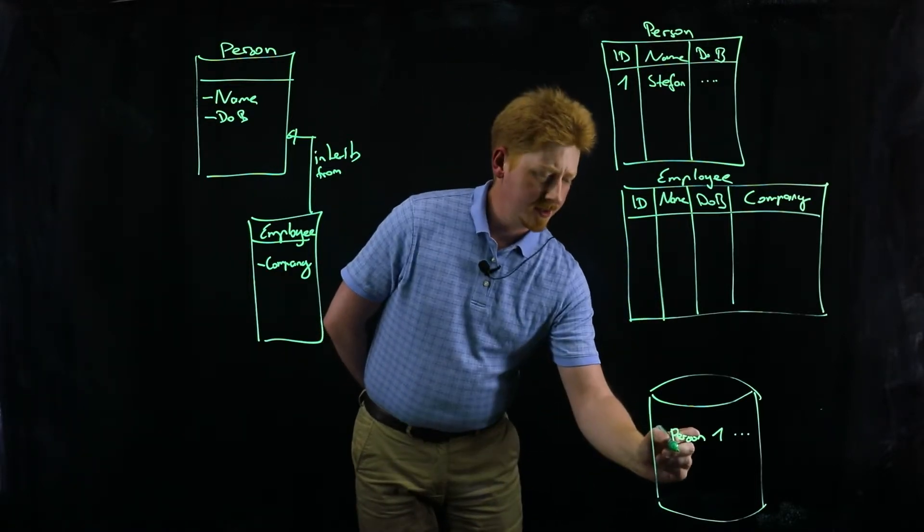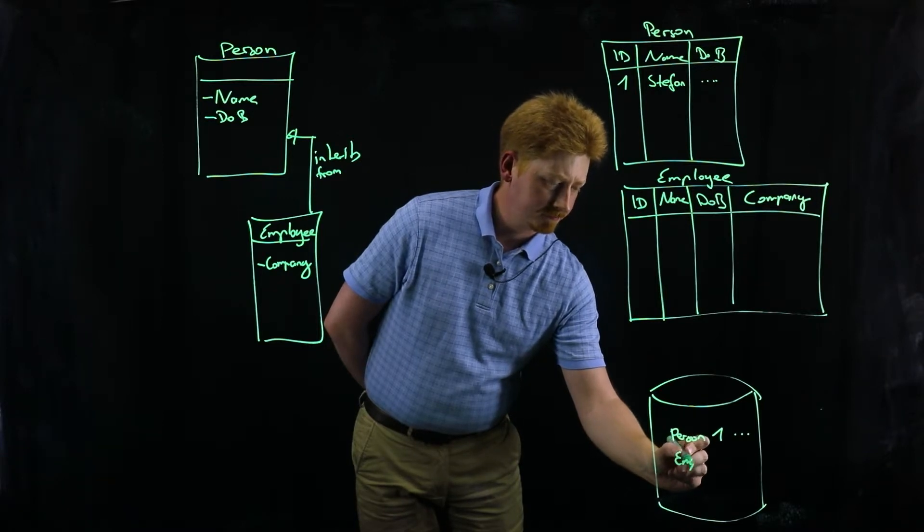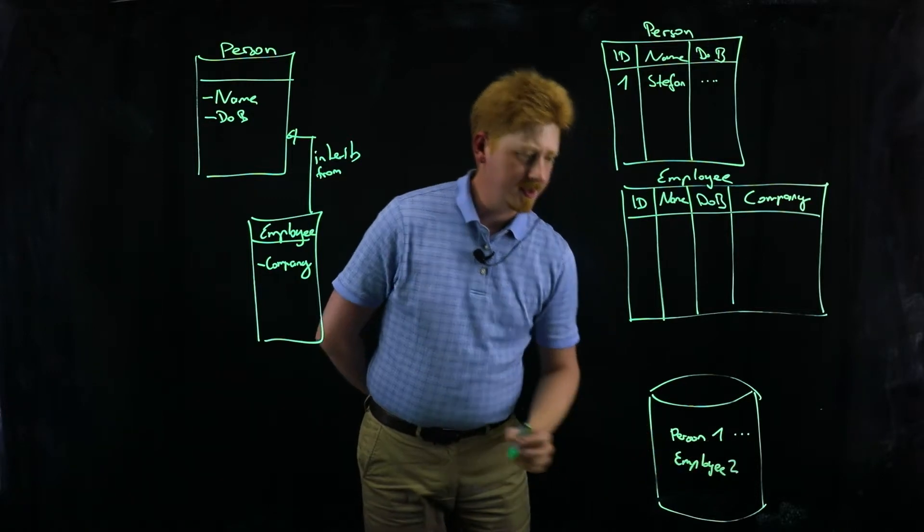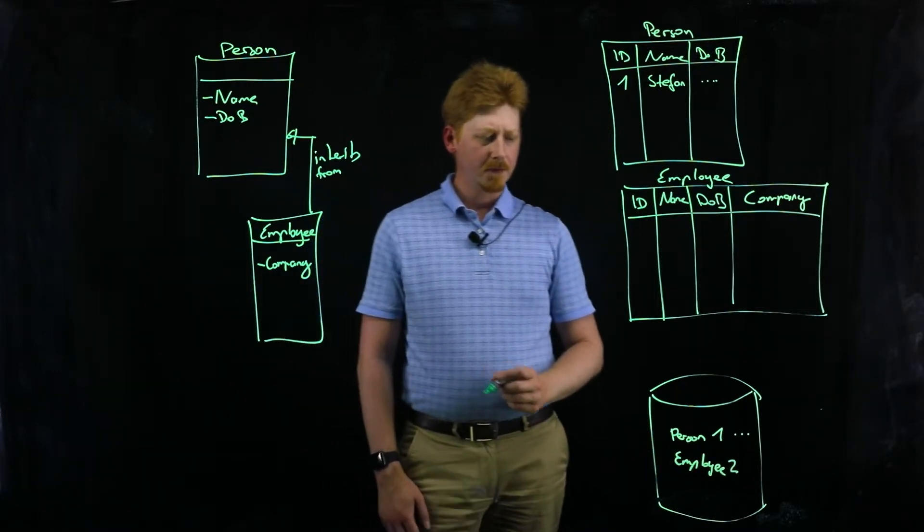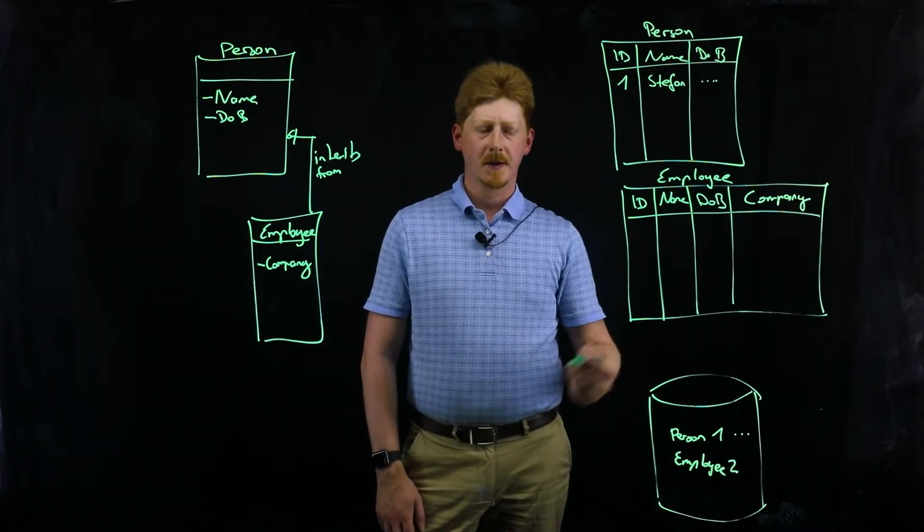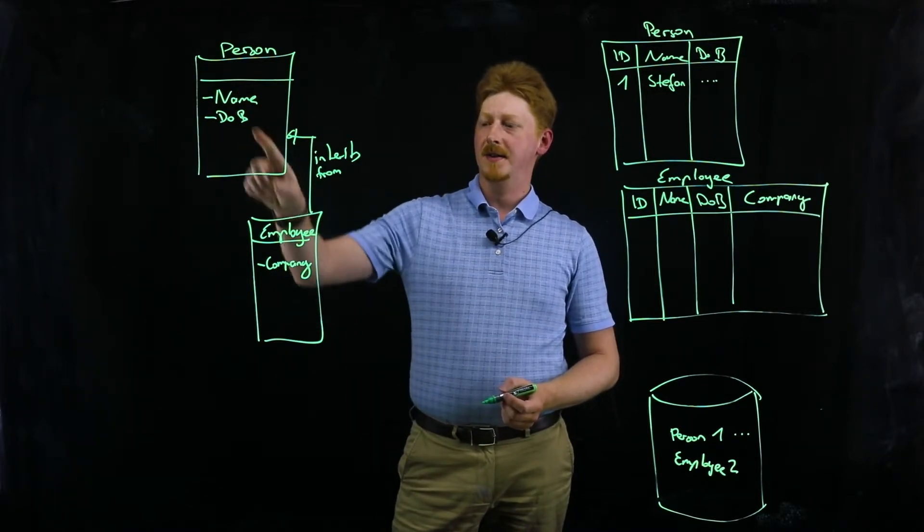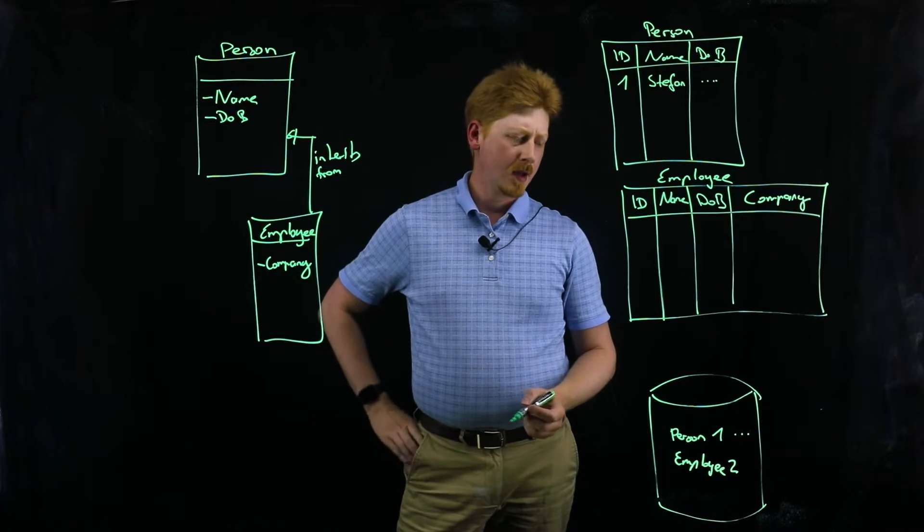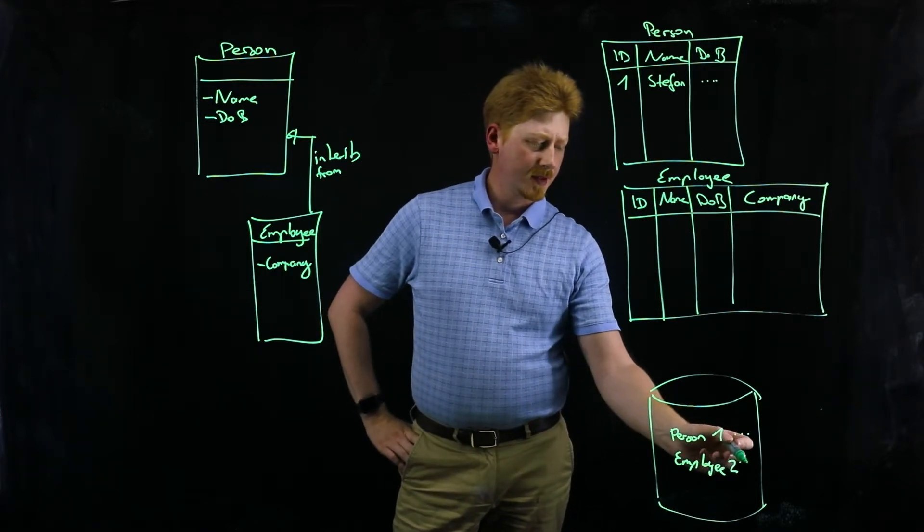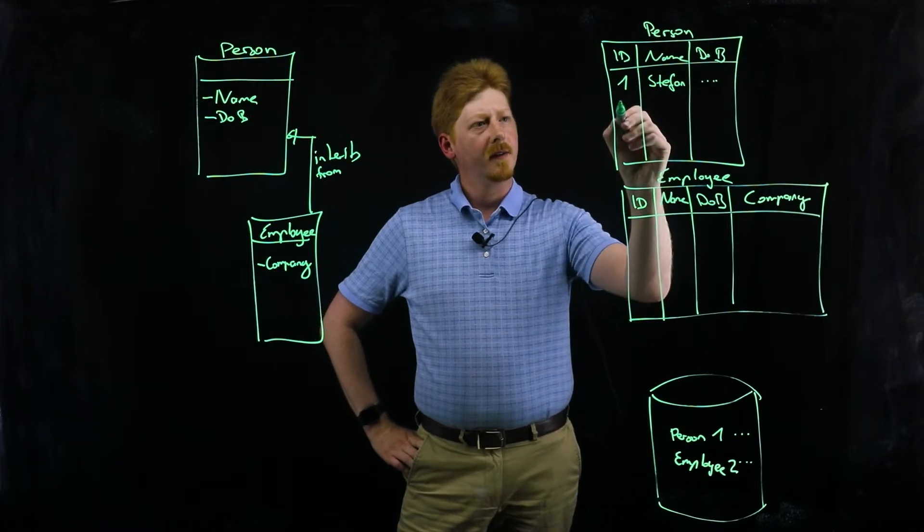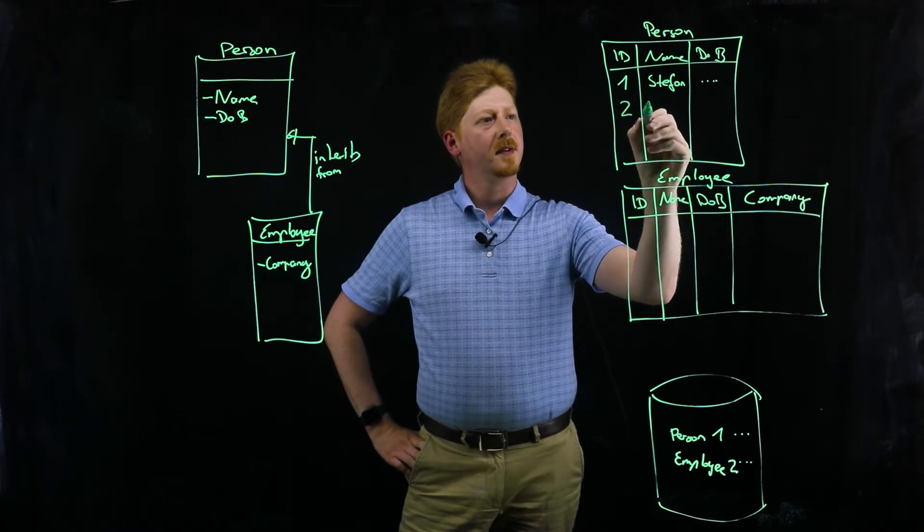Let's say we create an employee. That employee will get the ID number 2 because it's sharing the extent, running as a subclass from person. So it's not getting ID 1, it's getting ID number 2. And let's say this is Jeff.